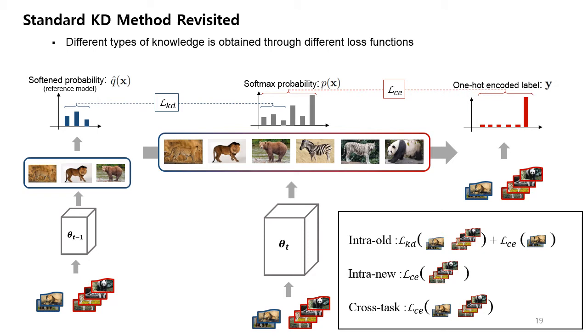If you look back on standard KD method from the perspective of three types of knowledge we mentioned in the previous slide, intra-old knowledge is mainly learned through distillation loss with new samples together with some of the previous samples, and additionally through cross-entropy loss using some of the previous samples. On the other hand, intra-new knowledge and cross-task knowledge are learned by only cross-entropy loss, using either new samples or both old and new samples. In the standard KD method, we can see that different types of knowledge are obtained through different types of loss function.